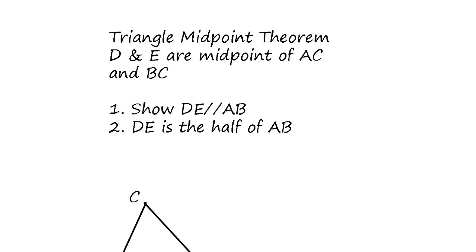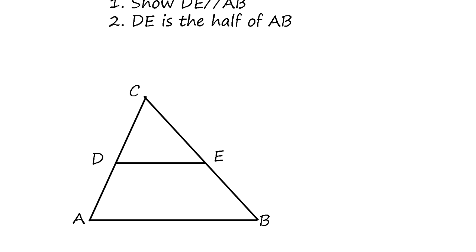Today we learn about the Triangle Midpoint Theorem. The theorem states that D and E are midpoints of AC and BC respectively. D being a midpoint means the two segments on either side are the same length. E being a midpoint means its two segments are also the same length. Then we show that DE is parallel to AB and find DE's length when AB's length is known to be A. This is the basic theorem.